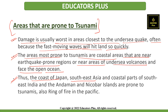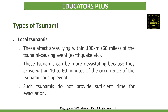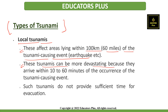The coast of Japan, Southeast Asia, coastal parts of Southeast India, and the Andaman and Nicobar Islands are prone to tsunamis, as is the Ring of Fire in the Pacific. The first type is local tsunamis, which affect areas lying within 100 km (60 miles) of the tsunami-causing event. These can be more devastating because they arrive within 10 to 60 minutes of the event and do not provide sufficient time for evacuation.